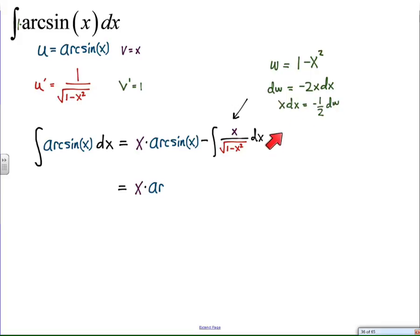So I'm going to replace x dx with negative one-half dw, and I'm going to replace the square root of one minus x squared with the square root of w. So that's going to reveal the following.